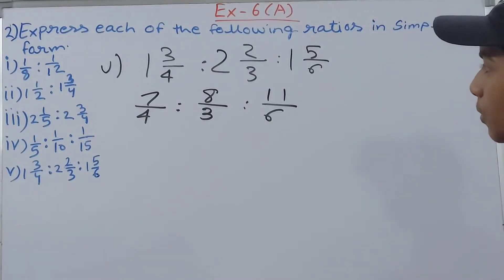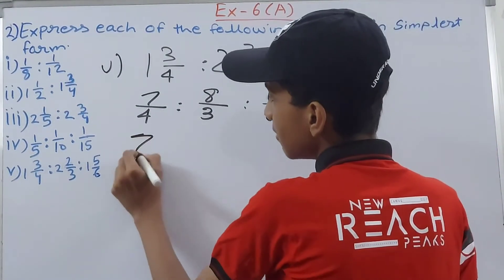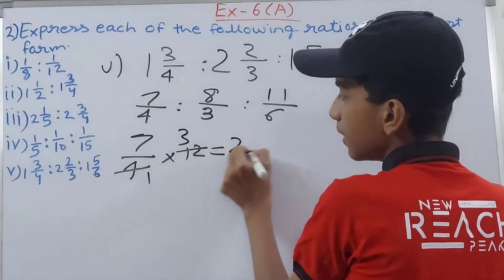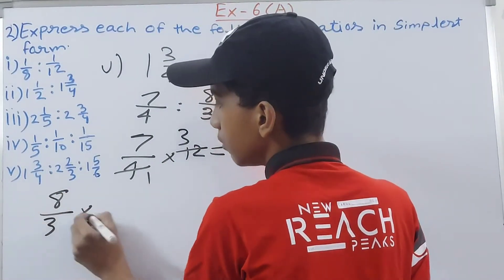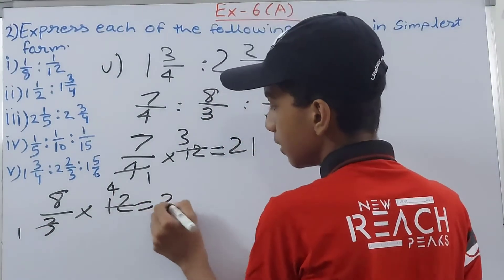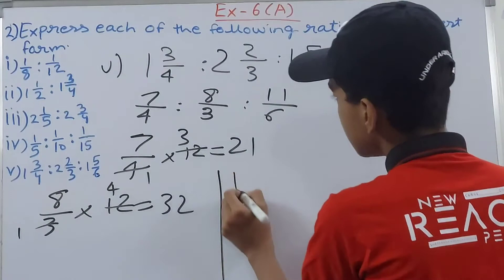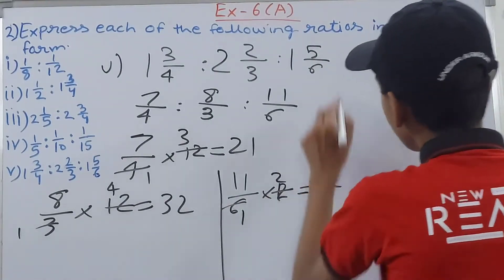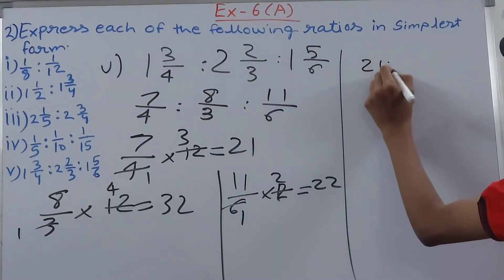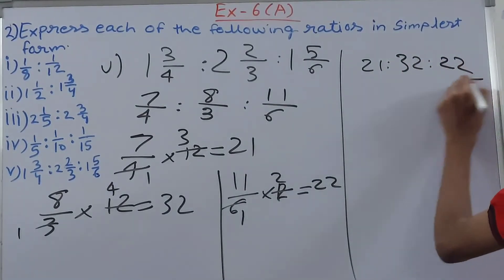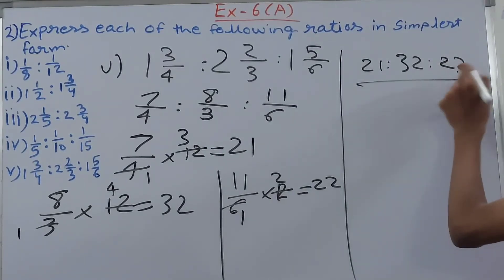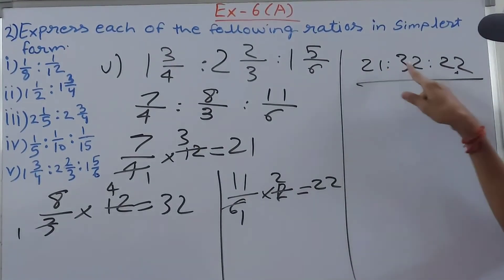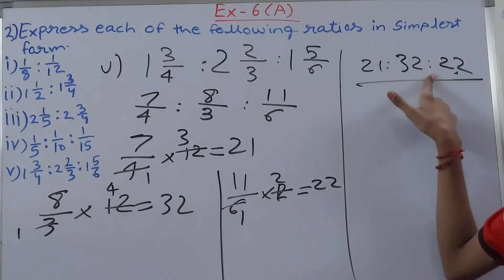The LCM of 4, 3, and 6 is 12. So 7/4 × 12 = 21, 8/3 × 12 = 32, and 11/6 × 12 = 22. The ratio becomes 21 : 32 : 22. We cannot simplify all three with a single common factor, so we leave it as 21 : 32 : 22 as our answer.